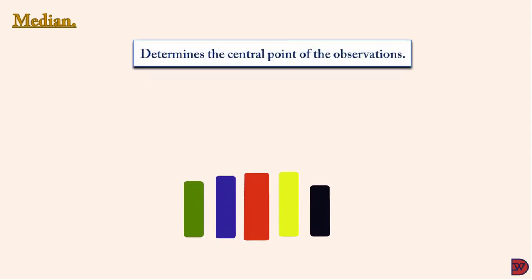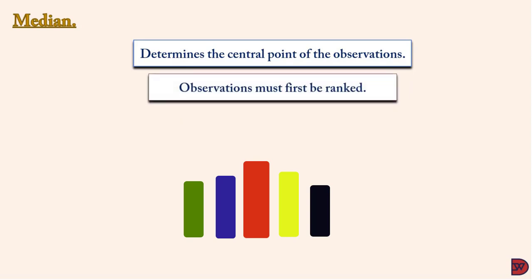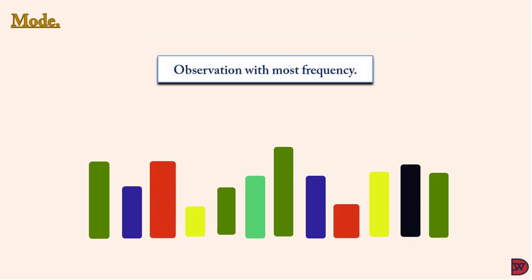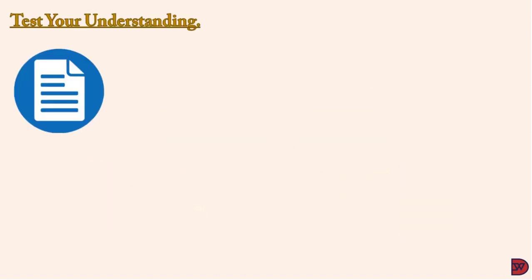The median is the central point of all the observations. If you spread the values out, the middle number is the median. To get the median, you must first rank the observations in ascending order. If the number of observations is even, two observations will be in the middle — add those two numbers and divide by two to get the median. The mode is the observation or value with the most frequency.